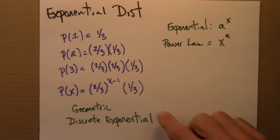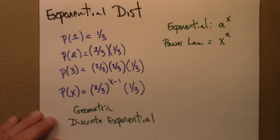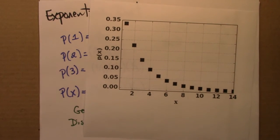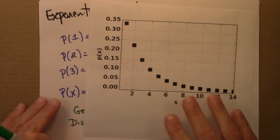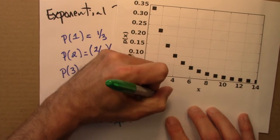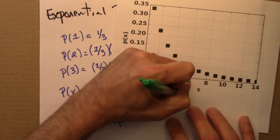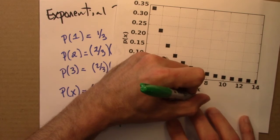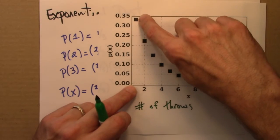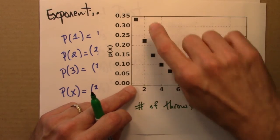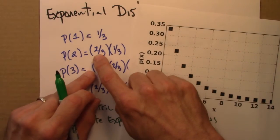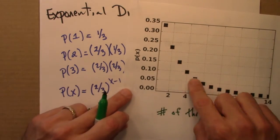What would happen if I were to plot this? Let's see. So here's a plot of this distribution. So this is the number of throws. And then this is the probability. So the probability that it takes me just one throw is 0.33. The probability that it takes me two throws is, well, whatever that is, two ninths. And so on.